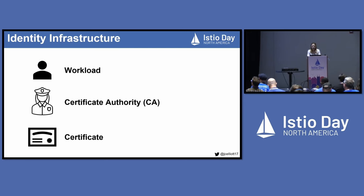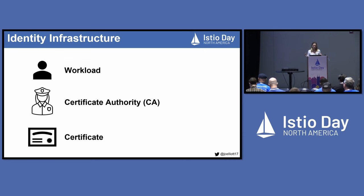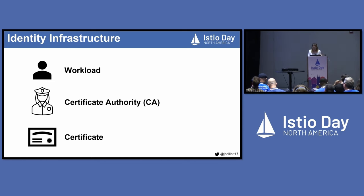What are some of the common threads you'll see throughout the identity solutions we're reviewing today? There are three common infrastructure components: your workloads that have an identity that needs to be verified, some trusted authority like a certificate authority that's responsible for issuing verified identity documents, and lastly, certificates that can be presented by the workload to establish trust.